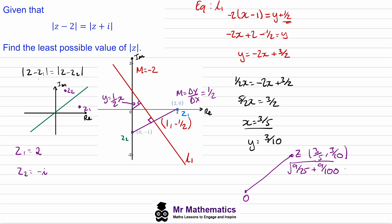I can simplify this using a common denominator, so the square root of 36/100 plus 9/100, so 45/100. Taking the square root of top and bottom, we've got 3√5 over 10, and this will be the least possible magnitude of z.